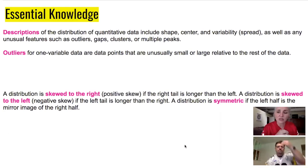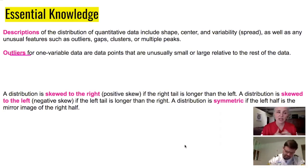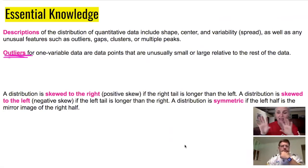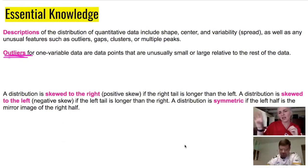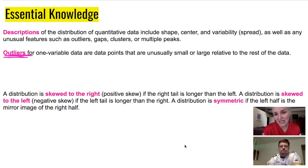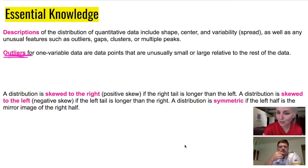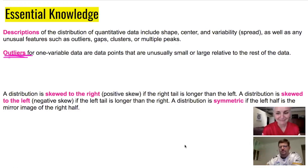Let's start with outliers. Think about the word outlier — it lies outside of the typical data set. So it's either a lot bigger or a lot smaller than what you would expect to see with the rest of the data. It's somebody who's on the outs a little bit.